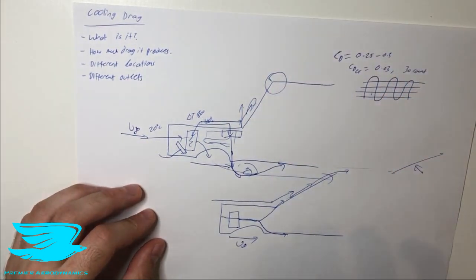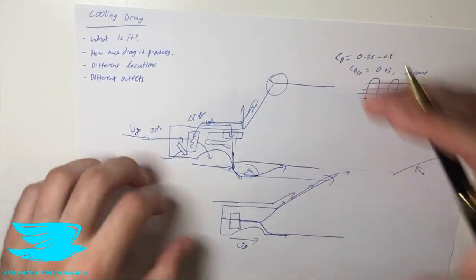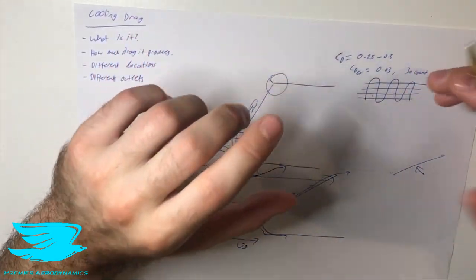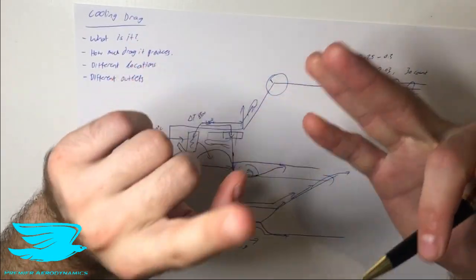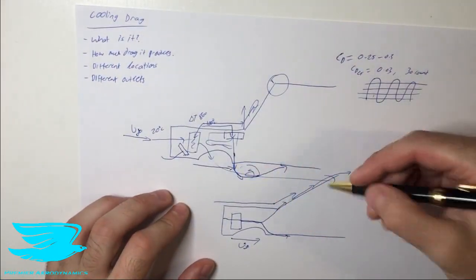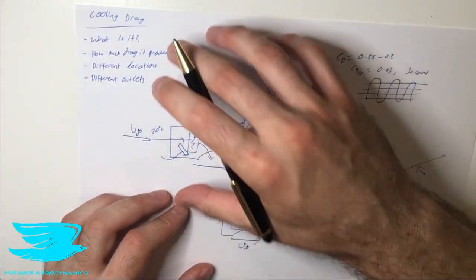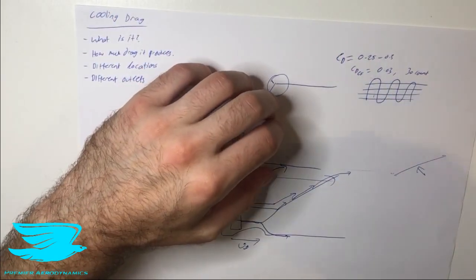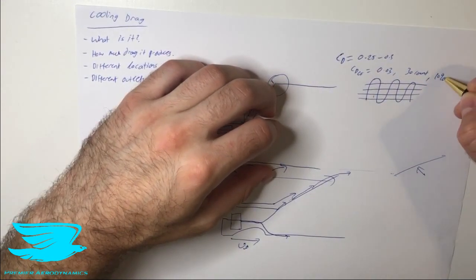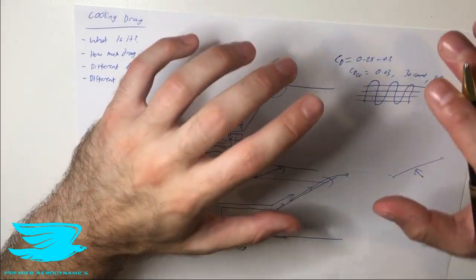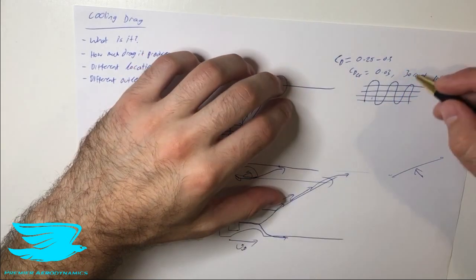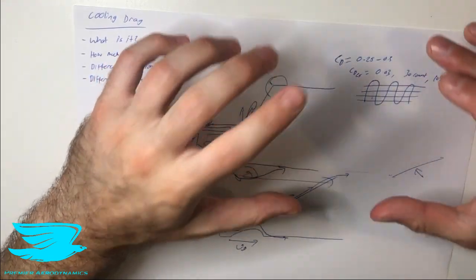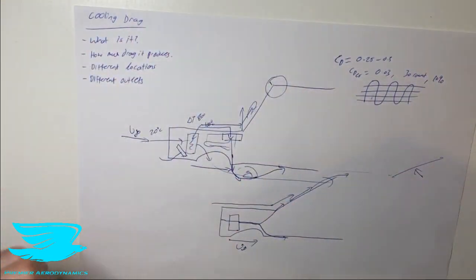So that is the cooling drag. Let's recap what we just covered here. The cooling drag is the drag that arises from cooling the car, as you'd expect. This mainly comes from the radiator: the inlet to the radiator, the radiator itself, the outlet, and where it goes from there. The general amount of drag that the cooling flow produces is about 30 counts, 0.03, which is about 10% of a car's total drag coefficient. For electric cars, this is quite a bit lower. You can reduce this number by about 80% perhaps, because they don't need nearly as much cooling flow as an internal combustion engine.